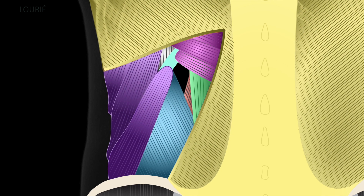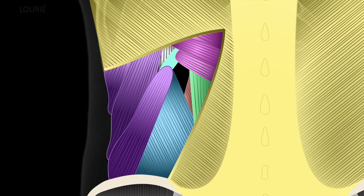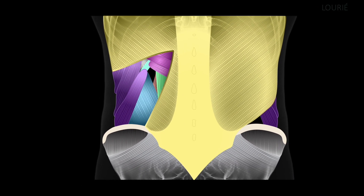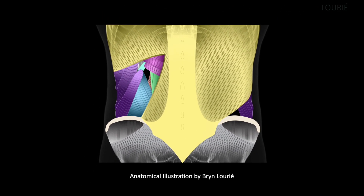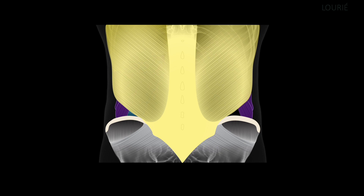It's important to remember that the superior lumbar hernia is not a full thickness hernia. Like a Spiegelian hernia anteriorly, it has a roof or covering — in this case, the latissimus dorsi over it.